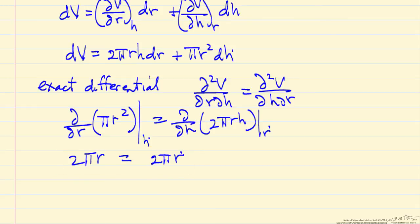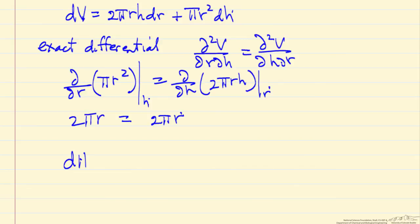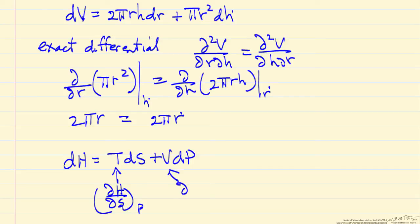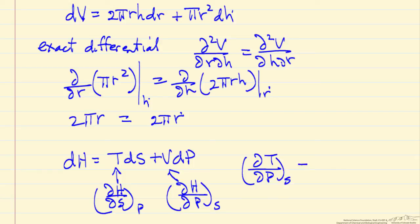We're going to use this in thermodynamics. For example, if we have an expression for enthalpy in terms of two state variables, then T is the derivative of H with respect to S at constant pressure, and V is the derivative of H with respect to pressure at constant S. By applying exact differentials, we get the relation: the derivative of T with respect to P at constant S equals the derivative of V with respect to S at constant P — giving us additional Maxwell relations that are very useful in thermodynamics.